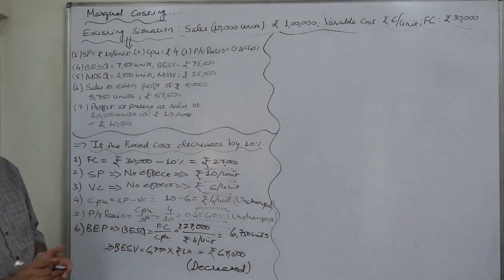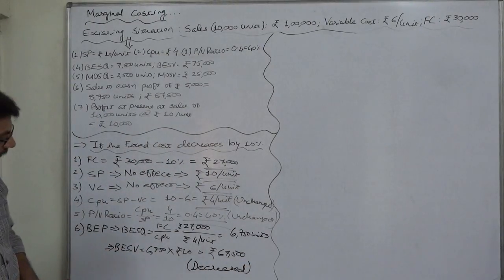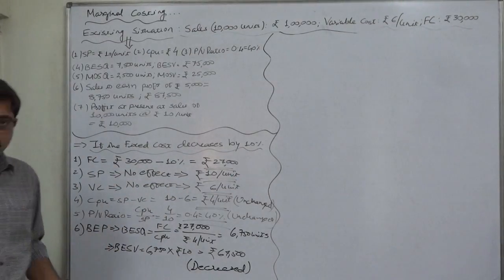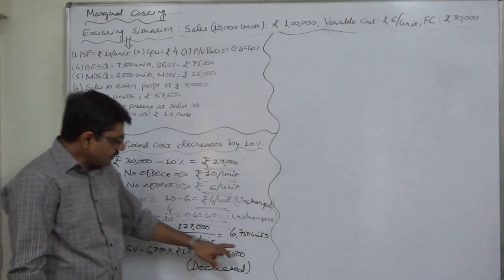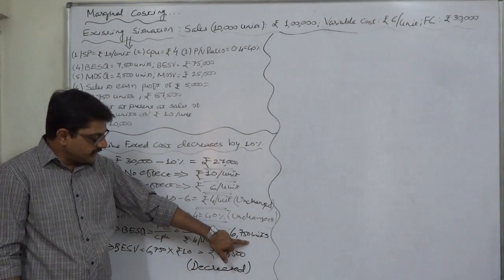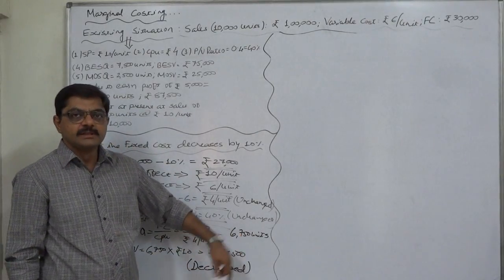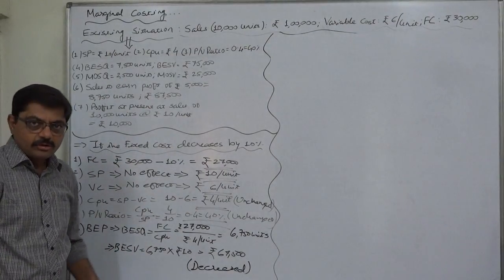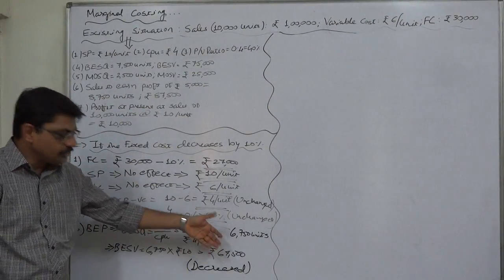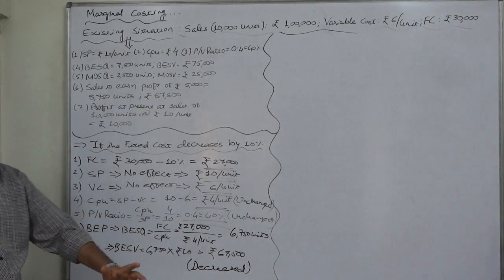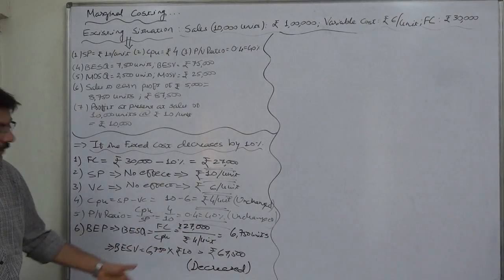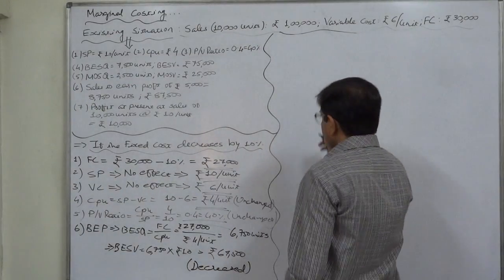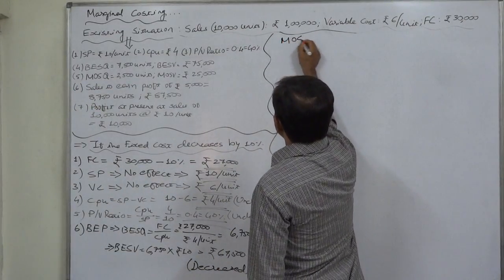This decrease is good for the financial health of the firm — the profit-making situation comes at an earlier stage, because from zero we reach the break-even at 6,750 units before reaching 7,500. We can also say that under the new situation, sales of 7,500 units will give us a profit, because it will be greater than our break-even point. Now let us look at margin of safety.